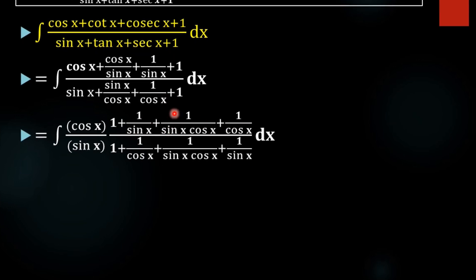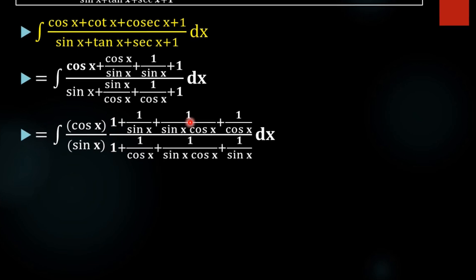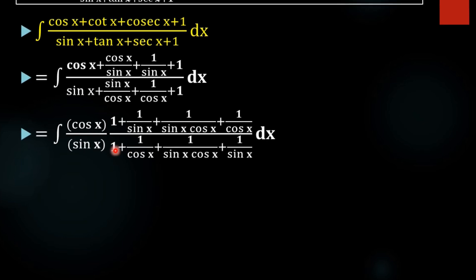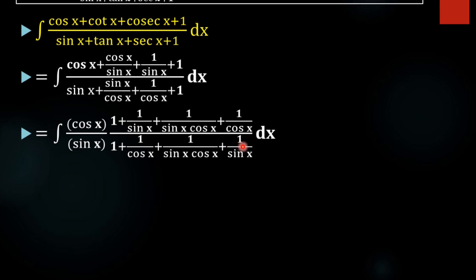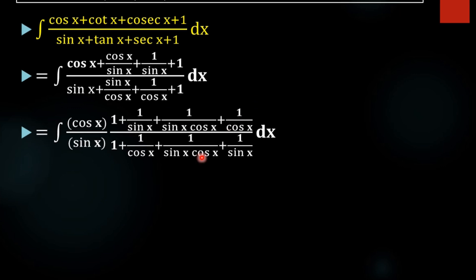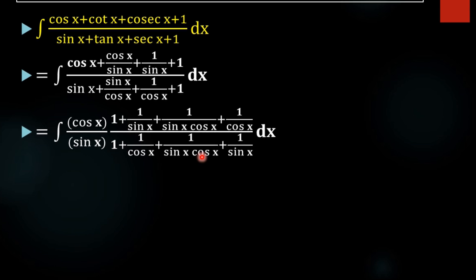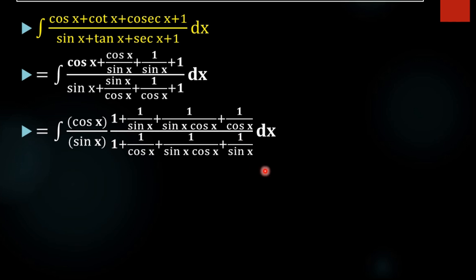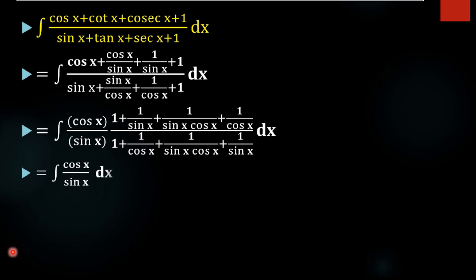Now observe: in both the numerator and denominator we have the same terms — 1, 1/sinx, 1/cosx, and 1/(sinx·cosx). Since the numerator and denominator are the same, they cancel each other, leaving us with the integral of cosx/sinx dx.